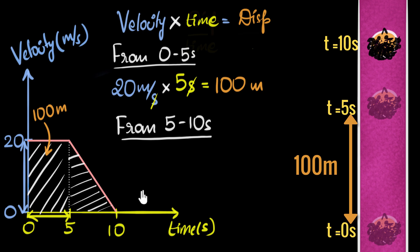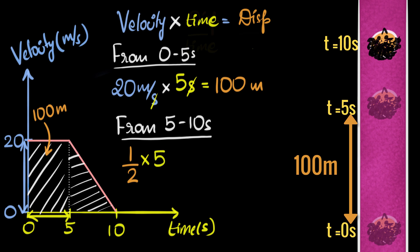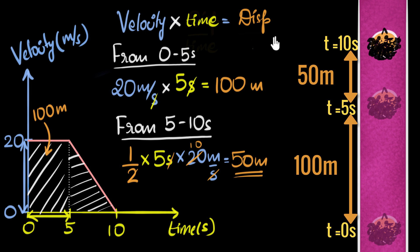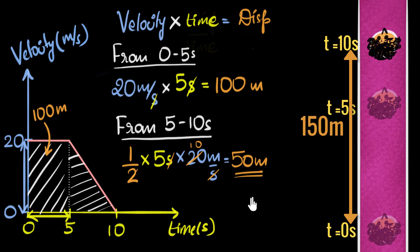I'm pretty sure you can calculate that area as well — pause the video and try. That area, which represents the displacement, is the area of a triangle: half times base times height. The base is five seconds, and the height is 20 meters per second. Seconds cancel, two goes 10 times — you get 50 meters. So the total displacement is 100 plus 50, which is 150 meters. Somehow this kid ended up walking 150 meters in 10 seconds.